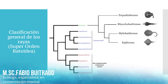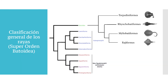Let's begin with the classification of these organisms. Before arriving at those orders on screen, we have to remember that they belong to the animal kingdom, to the vertebrates, to the phylum of the chordates. Within the phylum of the chordates, they belong to the class of chondrichthyes, like the sharks — they belong to the same class of chondrichthyes.